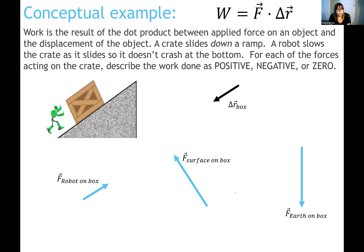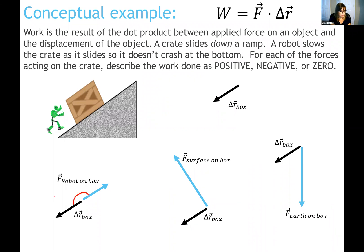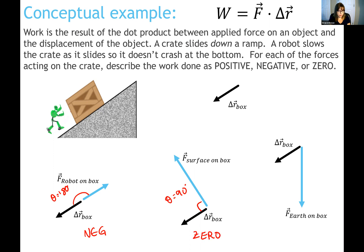Identify the angle between the displacement vector and each force. The robot's force has a 180-degree angle with displacement, so cosine of 180° gives a negative dot product — the robot does negative work. The ramp's normal force is perpendicular (90°) to the displacement, so the dot product is zero. Gravity's force has an acute angle with displacement, giving a positive dot product. The magnitudes are always positive, so it's the cosine of the angle that determines the sign.